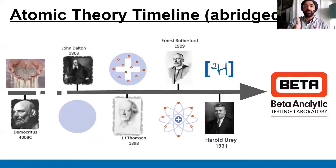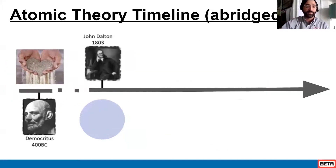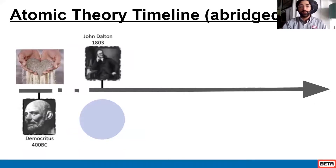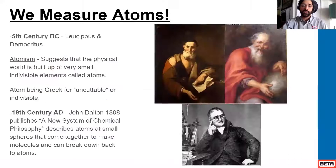I wanted to just take us through a timeline of what it means to really be measuring atoms. Democritus is one of the first people to begin to describe our physical world, and then John Dalton is one of the first people to actually perform experiments and begin understanding our physical world.